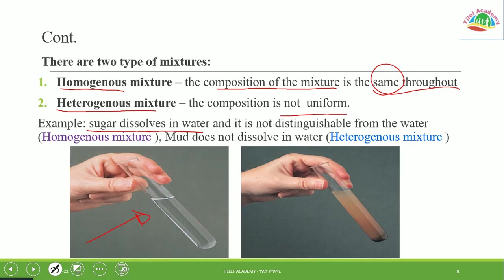In a homogeneous mixture, when one substance dissolves in another — for example salt dissolving in water — it becomes colorless and indistinguishable from the water, showing homogeneity. In a heterogeneous mixture, the substance does not dissolve evenly; differences in density or color intensity are visible. Heterogeneous mixtures can be detected by the naked eye or microscope, while homogeneous mixtures cannot.